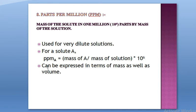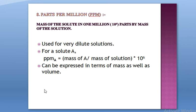Parts per million can be expressed in terms of mass as well as volume. In terms of mass, it is the mass of the component in 1 million parts by mass of all the components. In terms of volume, it is the volume of that component in 1 million parts by volume of all the components — simply replace mass with volume everywhere in the formula.